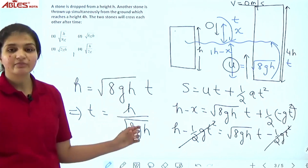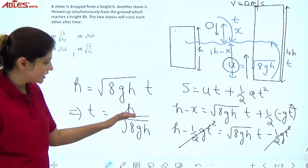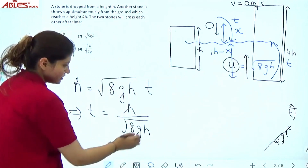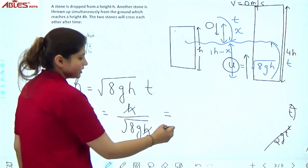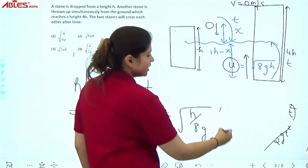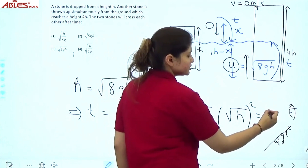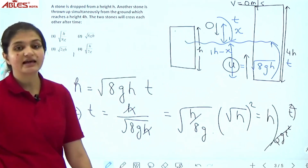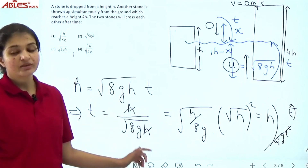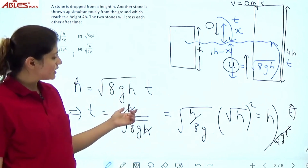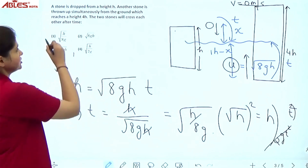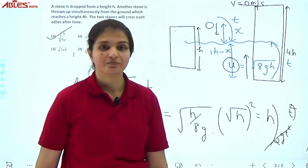Simplifying t = h / √(8gh): we can write this as t = √(h²) / √(8gh) = √(h² / 8gh) = √(h / 8g). So the two stones will cross each other after time t = √(h / 8g).